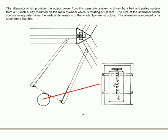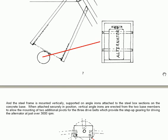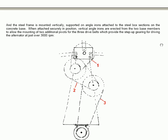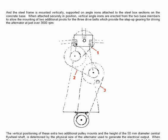The steel frame is mounted vertically, supported on angle irons attached to the steel box sections on the concrete base. When attached securely in position, vertical angle irons are erected from the two base members to allow the mounting of two additional pivots for the three drive belts which provide the step-up gearing for driving the alternator at just over 3000 RPM. And this is the arrangement where the additional belt drives providing that gearing are connected. The first one is connected to the 16 inch drive band on the flywheel. The second one is to another step-down arrangement here to another pulley which comes down then to the alternator itself.